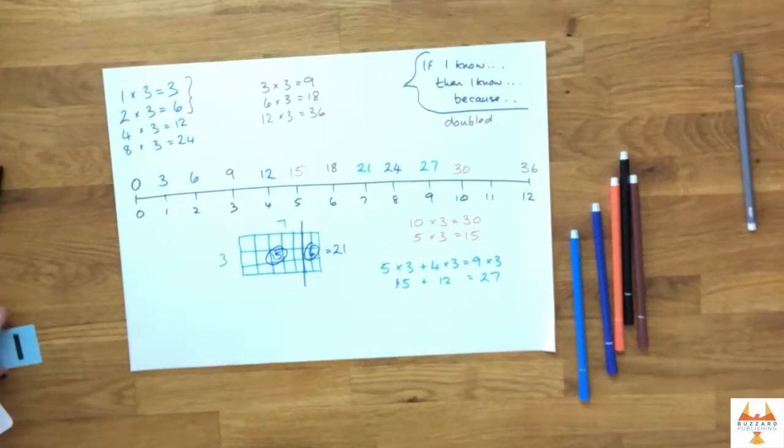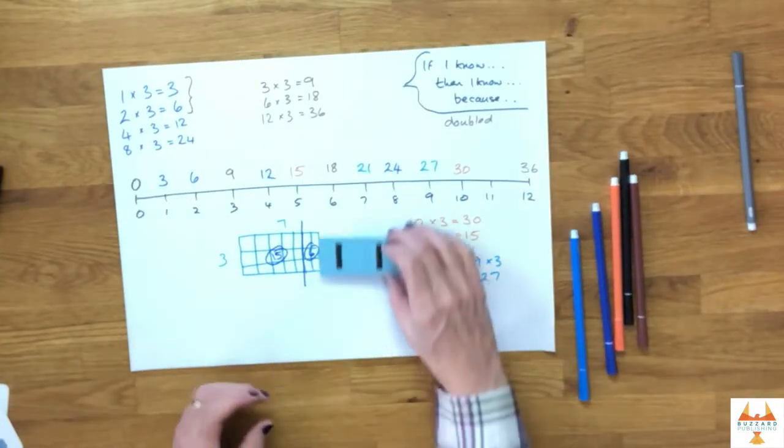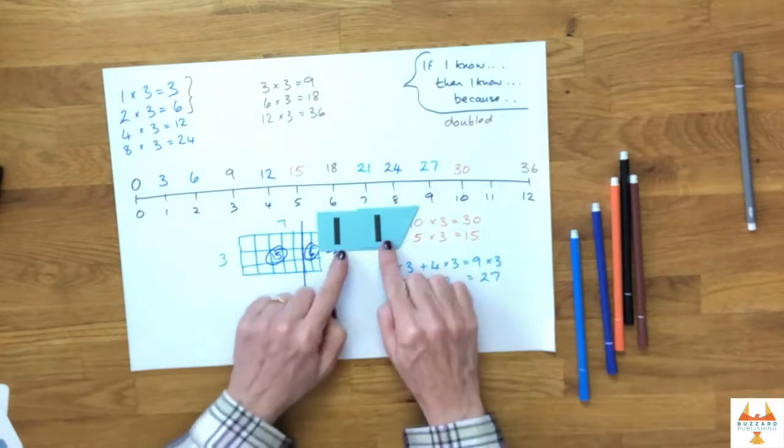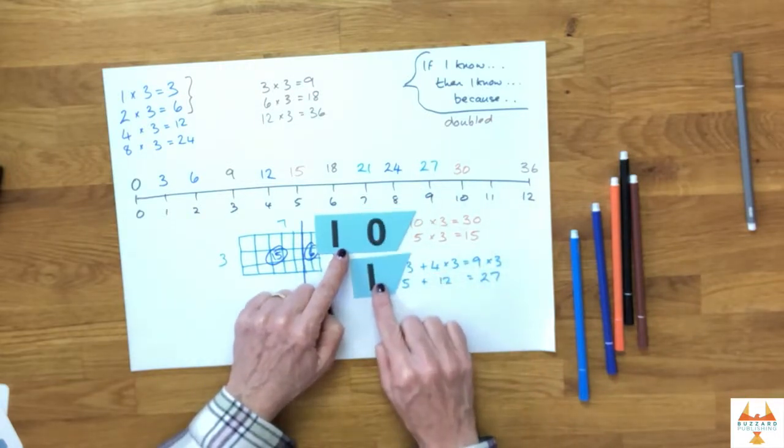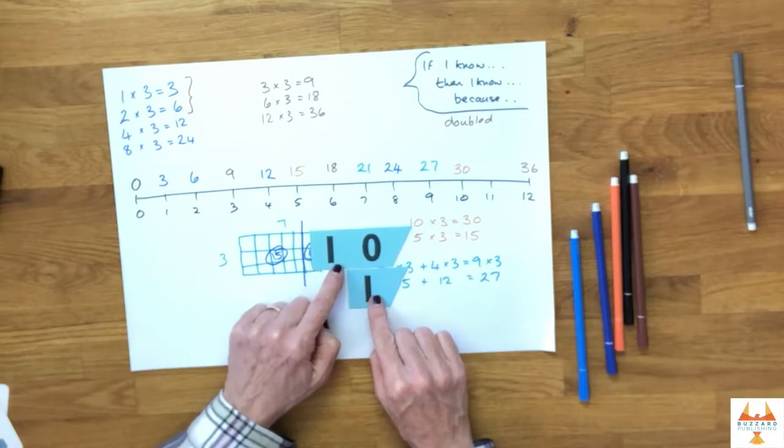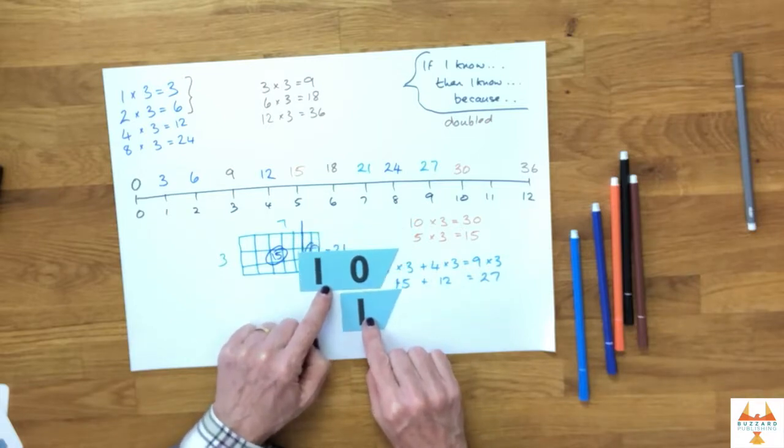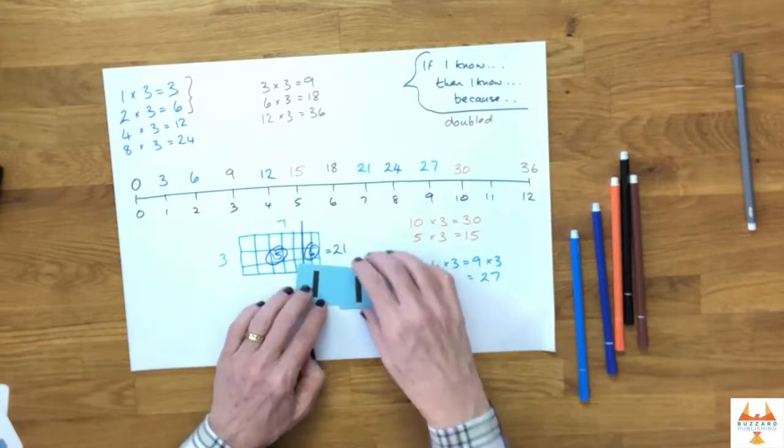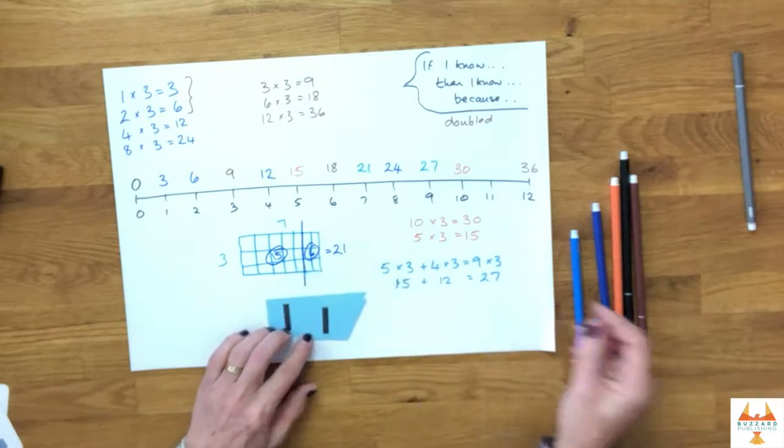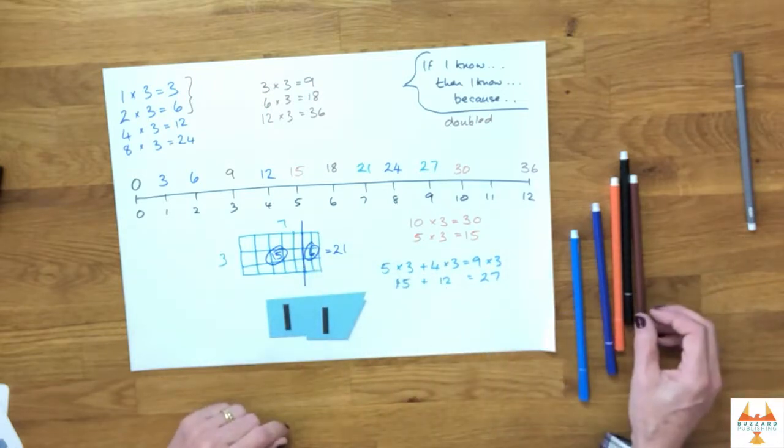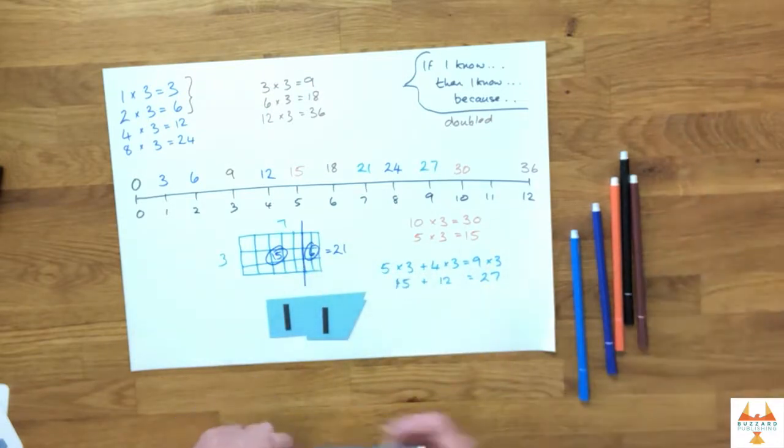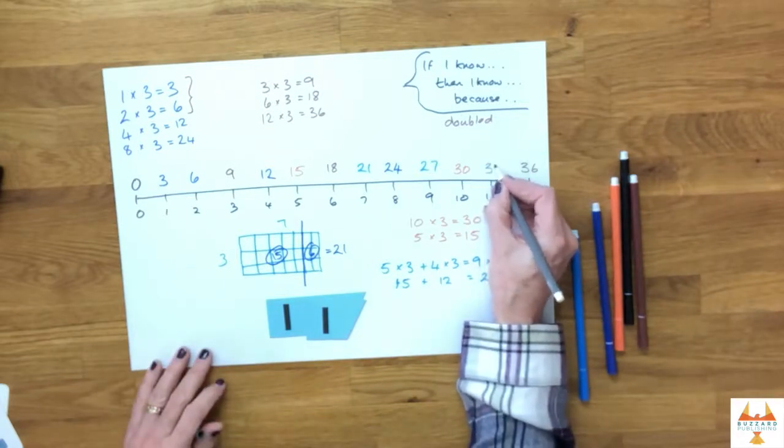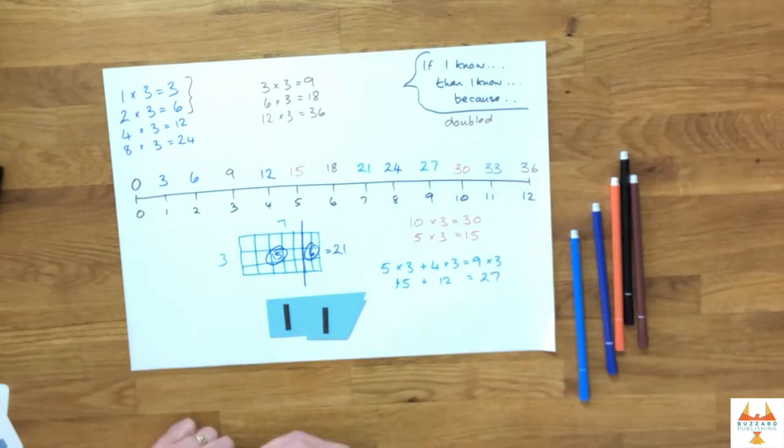When I'm trying to calculate 11 threes, it's important to refer back to thinking about our place value, that if I know 11 is made up of 10 and 1, then I know that 10 threes and 1 three put together will give me 11 threes. 10 threes are 30, 1 three is 3. Putting them together gives me 33, 33 for 11 times 3.